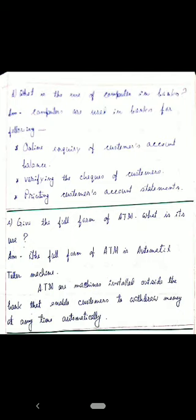Question E: Give the full form of ATM and what is its use? Answer: The full form of ATM is Automated Teller Machine. ATM machines are installed outside the bank and enable customers to withdraw money at any time automatically.